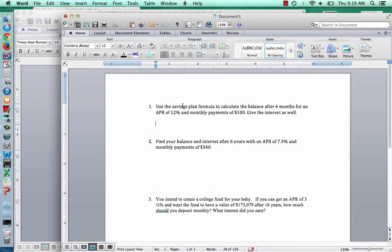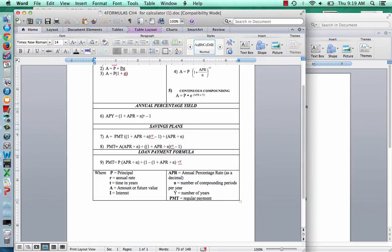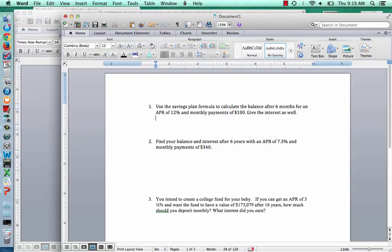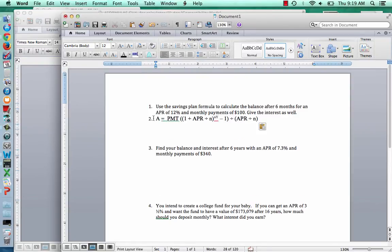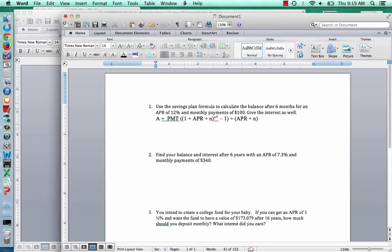Let's look at some examples here. It says, use the savings plan formula to calculate the balance after 6 months for an APR of 12% with monthly payments of $100. Give the interest as well. So since we know the monthly payments, we're going to use Formula 7 and we want to figure out what it's going to grow to. I'm going to copy and paste that over so you can see what I'm going to do here.